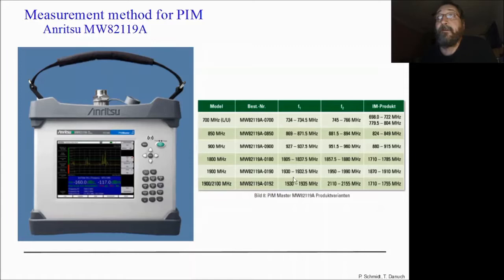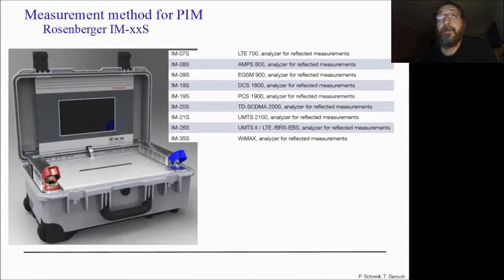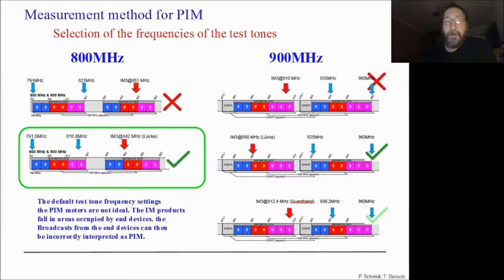Here you can see some measurement devices — there are different devices for different frequency bands. For intermodulation measurements in the low band I prefer 800 MHz.